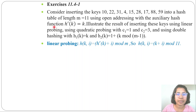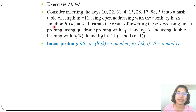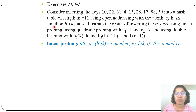Till now in hashing I already discussed direct address table, hash table, hash function, and collision resolution techniques. We can handle collision in two ways: one is chaining, another is open addressing. In chaining we store multiple keys in a single slot using a linked list. In open addressing we use three techniques: first is linear probing, second is quadratic probing, and double hashing for handling collision.